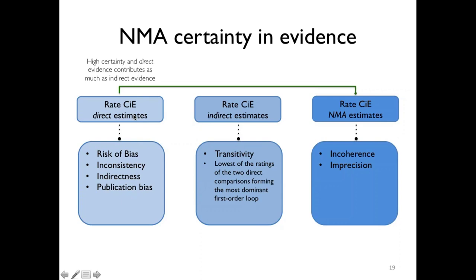If you end up with high certainty of the evidence for direct estimates, there may be little use for decision making — unless for academic purposes — to go to the indirect estimates. But if it's moderate, low, or very low, the indirect estimates become very important. There are two concepts to distinguish: one is inconsistency between the direct and the indirect evidence, and the other is transitivity, which basically means that if you look at different types of comparisons, do the orders make sense? Are the relative estimates of effect consistent when you look at different parts of the network or different loops?